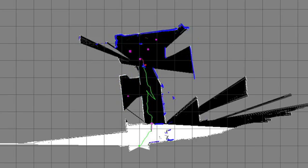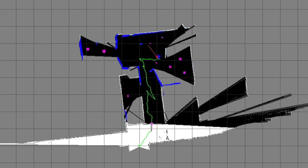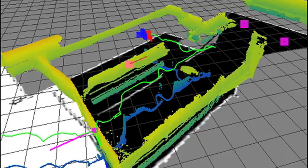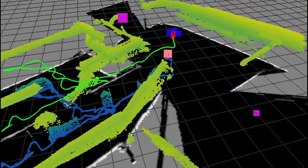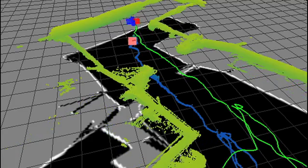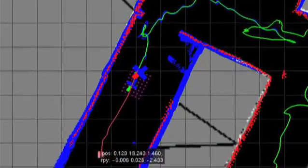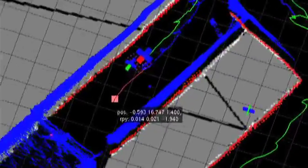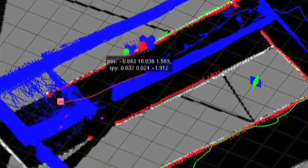The map generated by the SLAM algorithm also allows us to perform completely autonomous exploration of unknown environments. The exploration module seeks to balance learning the geometrical extent of the environment with sweeping known boundaries of the map for a visual target. This process must also choose trajectories that ensure the vehicle remains well localized.